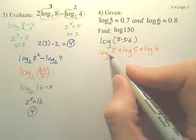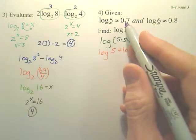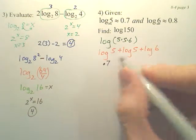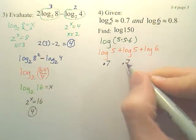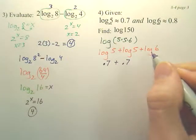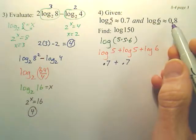What does log 5 equal? Is it approximately 0.7? What's log 5 equal? Approximately 0.7. What's log 6 equal? Approximately 0.8.